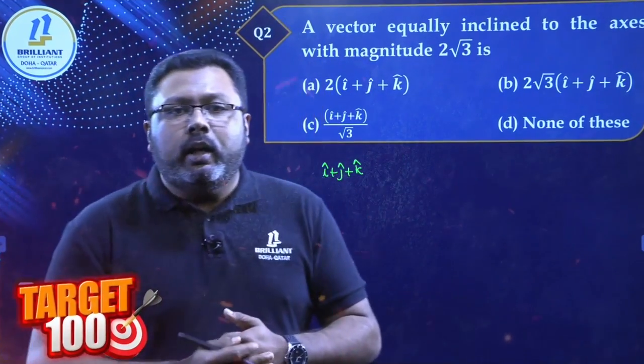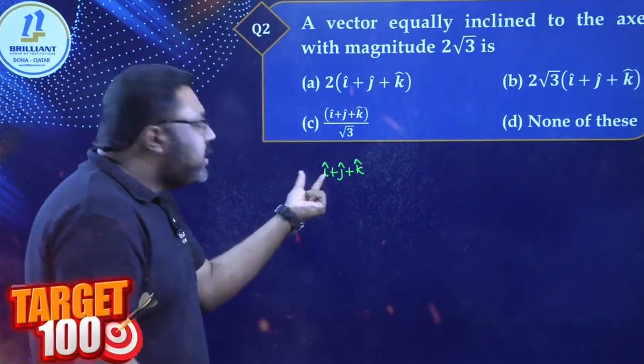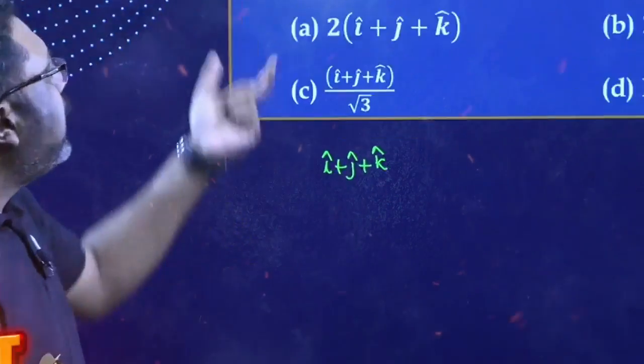Vector which is equally inclined to all the axes. The easiest vector you can say is I plus J plus K.